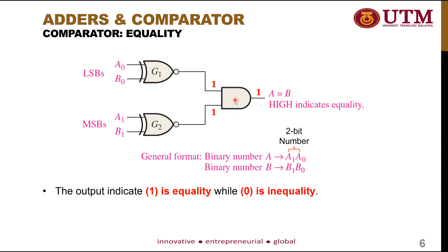In conclusion, a comparator output of 1 means equality, and an output of 0 means inequality. To compare two 2-bit variables, you must compare each digit at the same significant level — LSB with LSB and MSB with MSB. Next, I will show you the IC used as a comparator.